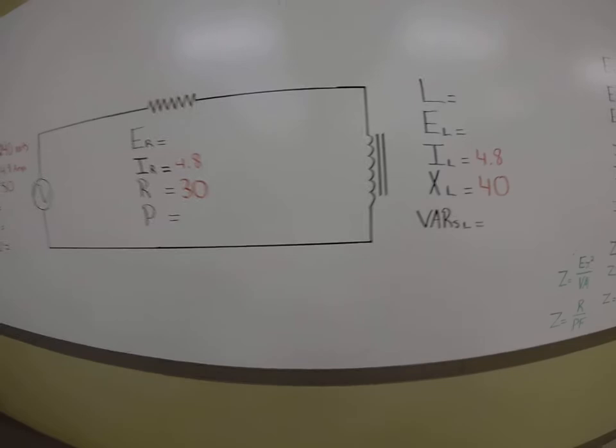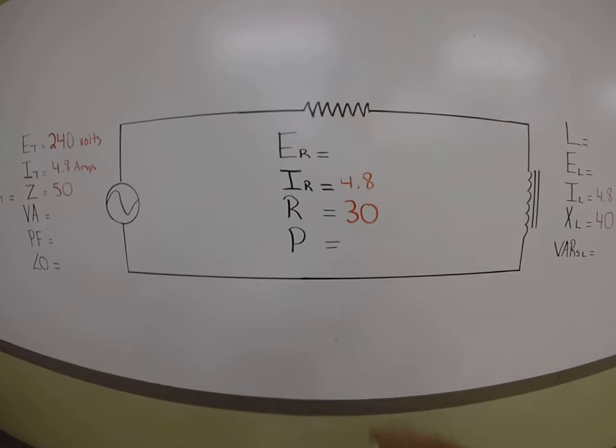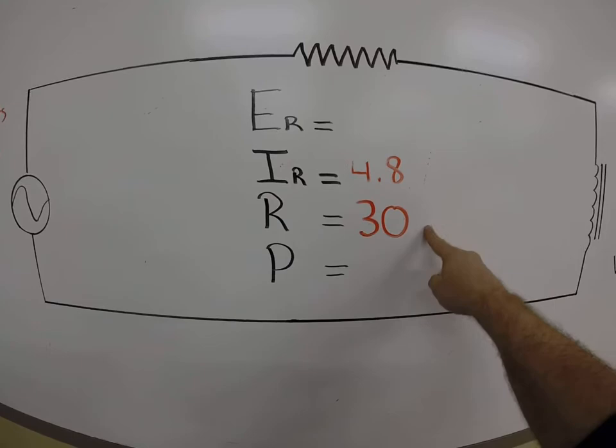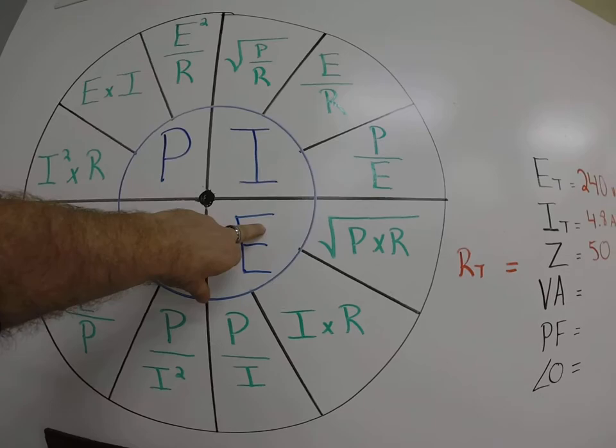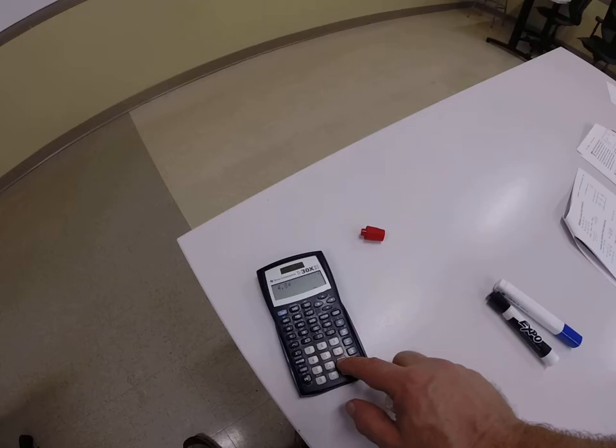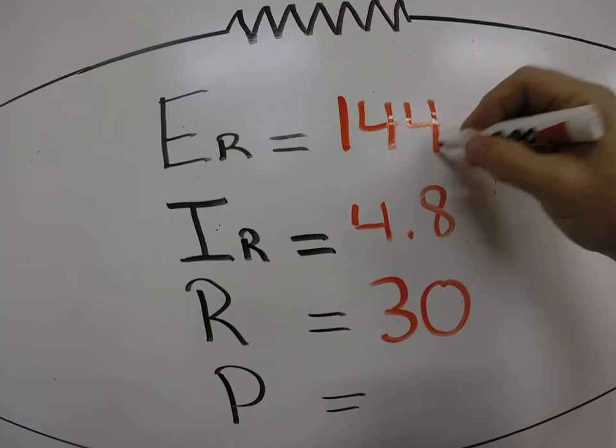Looking good, right? We've got two values in every column and three in that one. So why don't we solve for everything across the resistor first, because that's fresh in our minds from theory one. If we remember our Ohm's Law wheel, if I want to solve for E, and if I have I and R, I can simply come over to my Ohm's Law wheel. If I want to solve for E, I have I and R, I multiply them together. Voltage dropped across the resistor is going to be 4.8 times our resistance of 30. And we're going to drop 144 volts across the resistor.